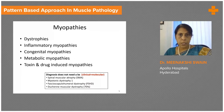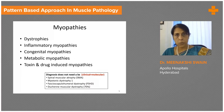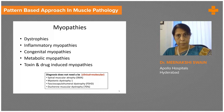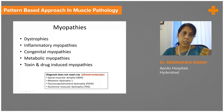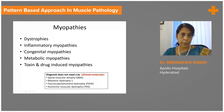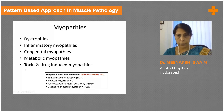Now we've more or less finished the basic stains that are required. So let's look at a few of the myopathies. Myopathies or primary muscle diseases are divided into these five broad categories of dystrophies, inflammatory myopathies, congenital myopathies, and metabolic and toxic and drug-related myopathies.